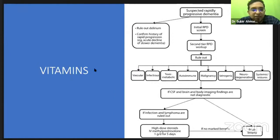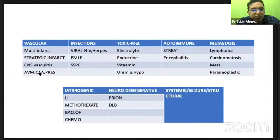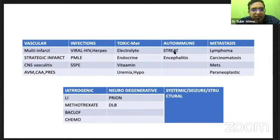For rapidly progressing dementia, remember the VITAMINS mnemonic: V for vascular — either multi-infarct state or strategic infarct (even a small thalamic infarct can cause memory impairment), vasculitis, AV malformation, cerebral amyloid angiopathy, posterior reversible encephalopathy; I for infections; T for toxics; A for metabolic causes; M for autoimmune — Hashimoto's encephalopathy, NMDA encephalitis; I for iatrogenic; N for neoplasm/carcinoma; S for structural.